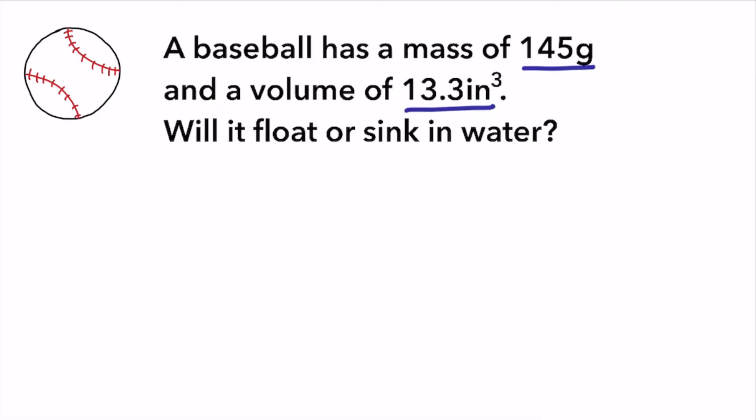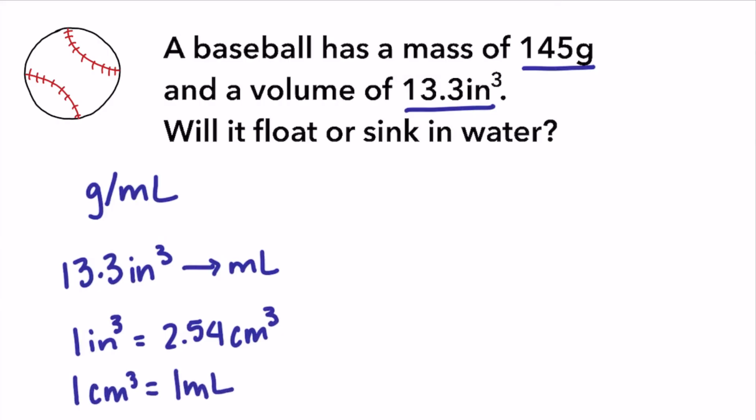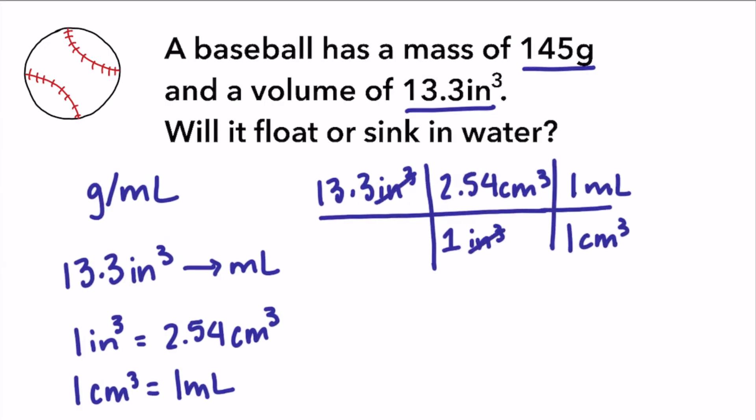Notice that our volume is given in cubic inches, but in order to compare the density of a baseball to the density of water, it needs to have the same units of grams per milliliter. So first we have to convert 13.3 inches cubed into milliliters using conversion factors. We know that 1 inch equals 2.54 centimeters, so in 1 cubic inch we have 2.54 cubic centimeters, and we know that 1 cubic centimeter is equal to 1 milliliter. So we can convert our units like this, and we get a volume of 33.782 milliliters.